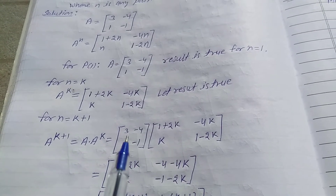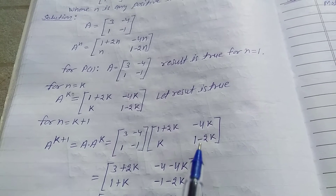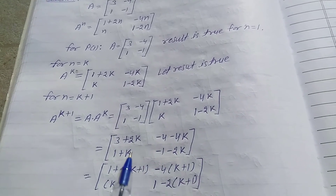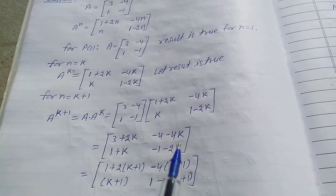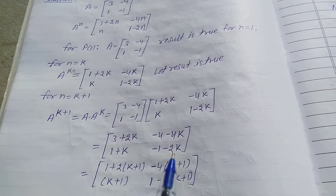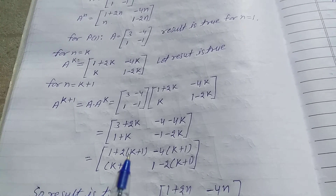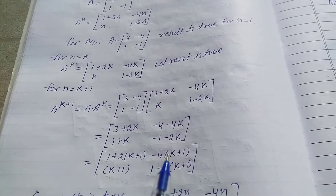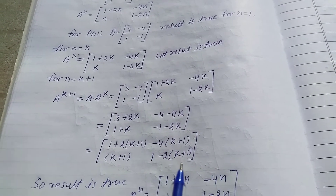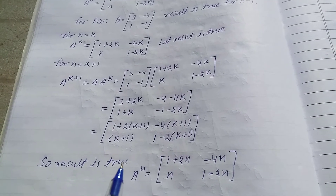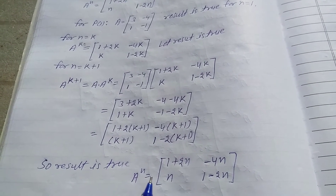Multiplying these matrices — first row multiplied by first column and first row by second column — the result is matrix [[3+2K-4-4K, ...], [...]]. This simplifies to matrix [[1+2(K+1), -4(K+1)], [K+1, 1-2(K+1)]], so the result is true for N equal to K+1.